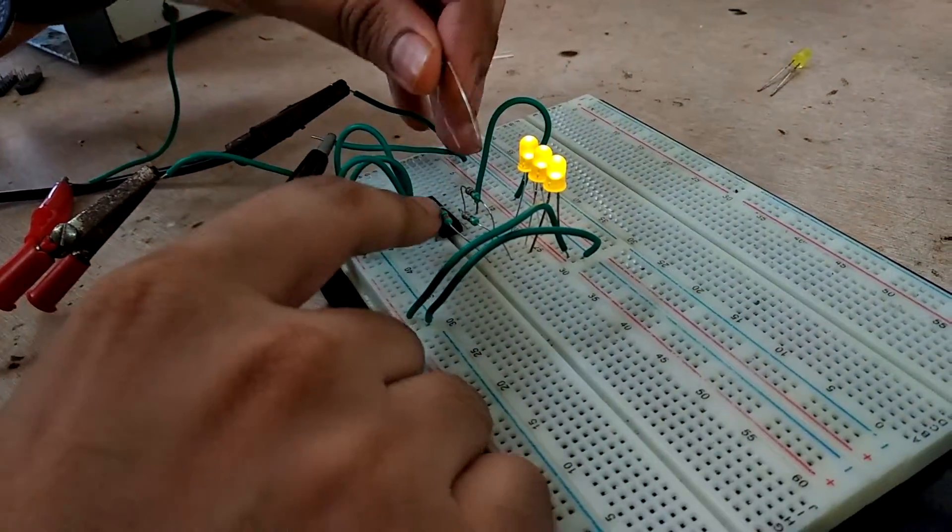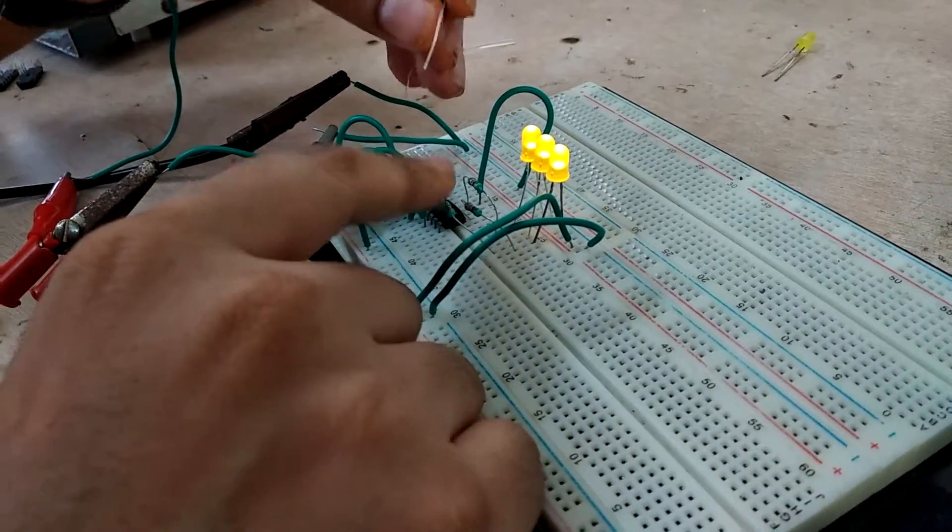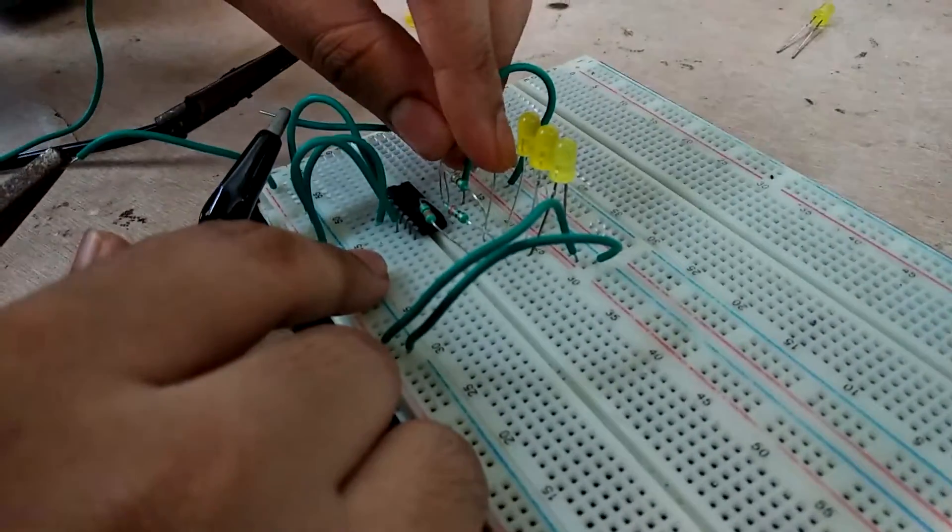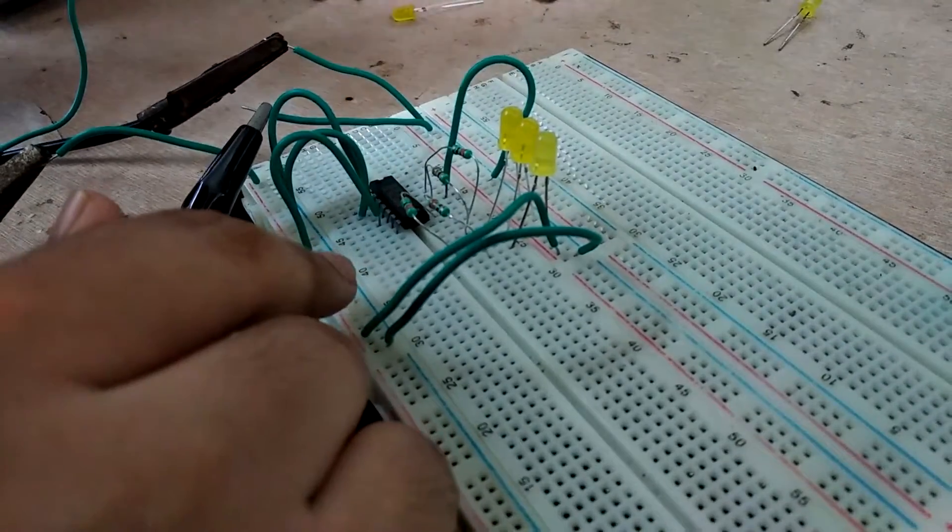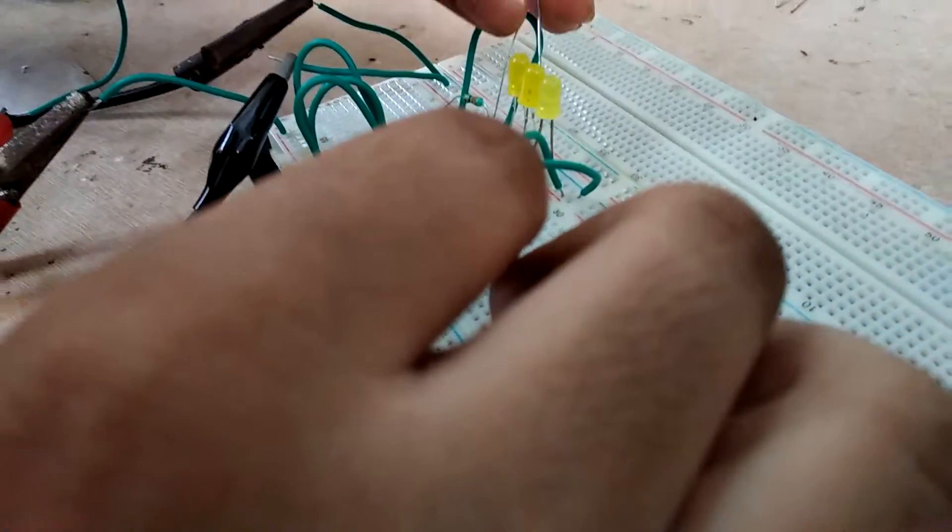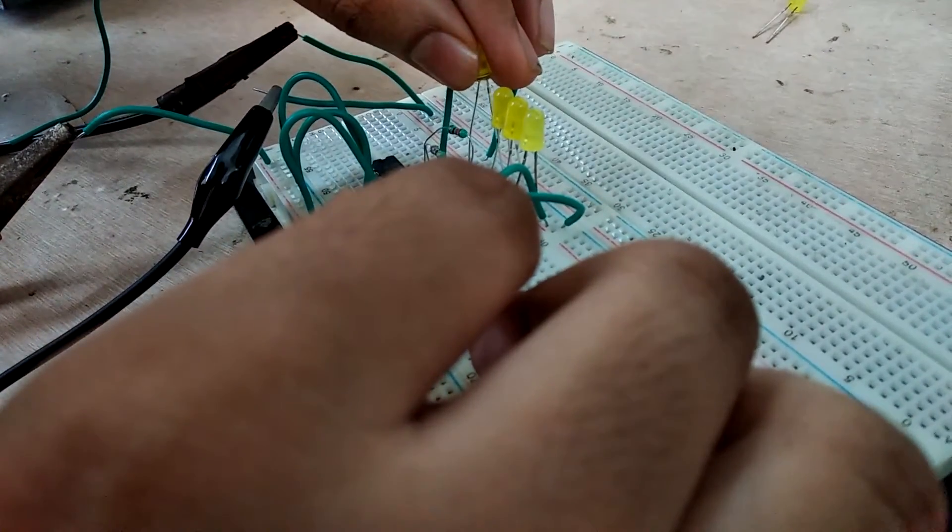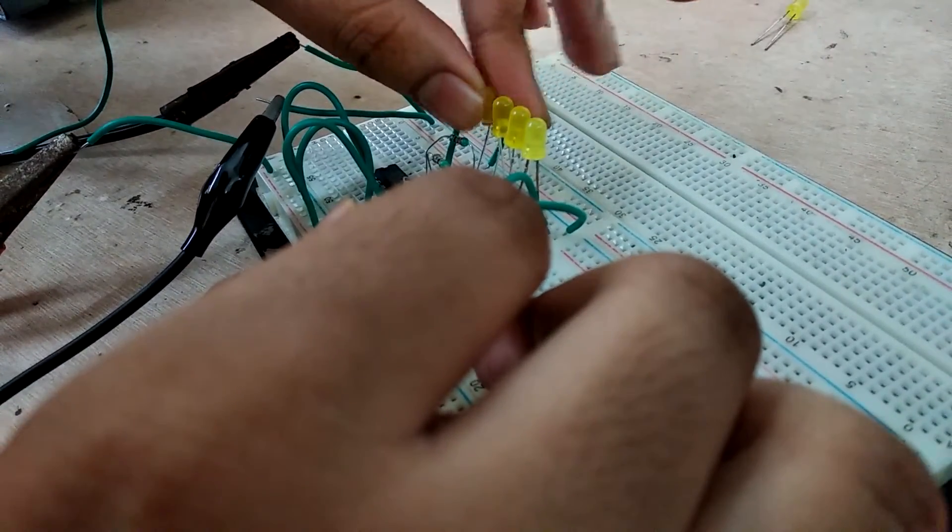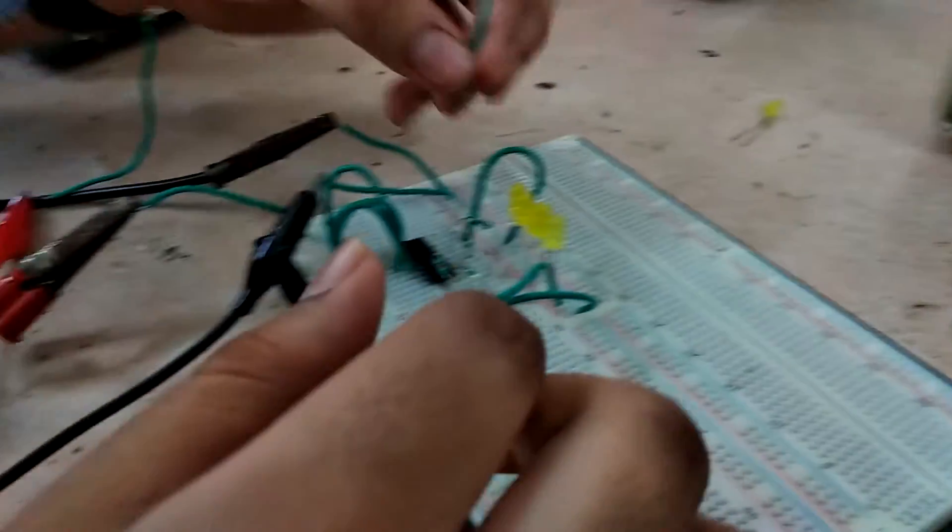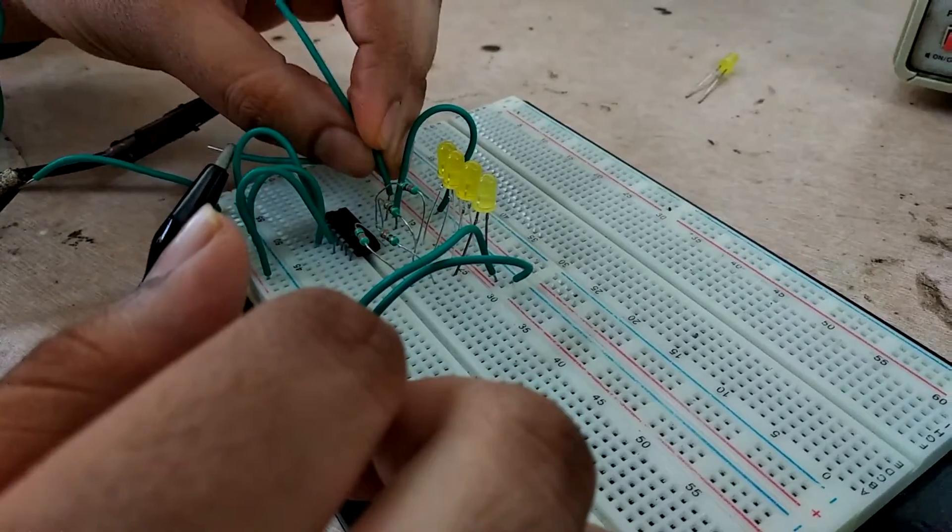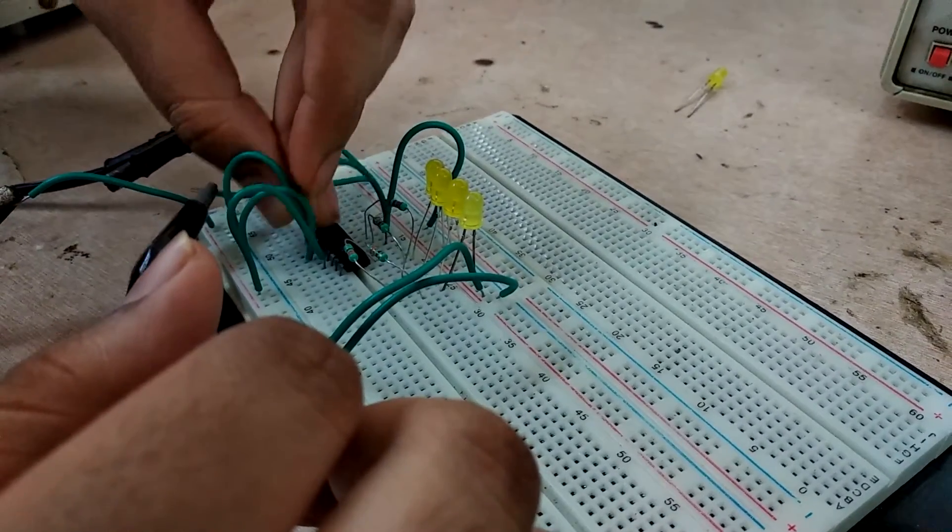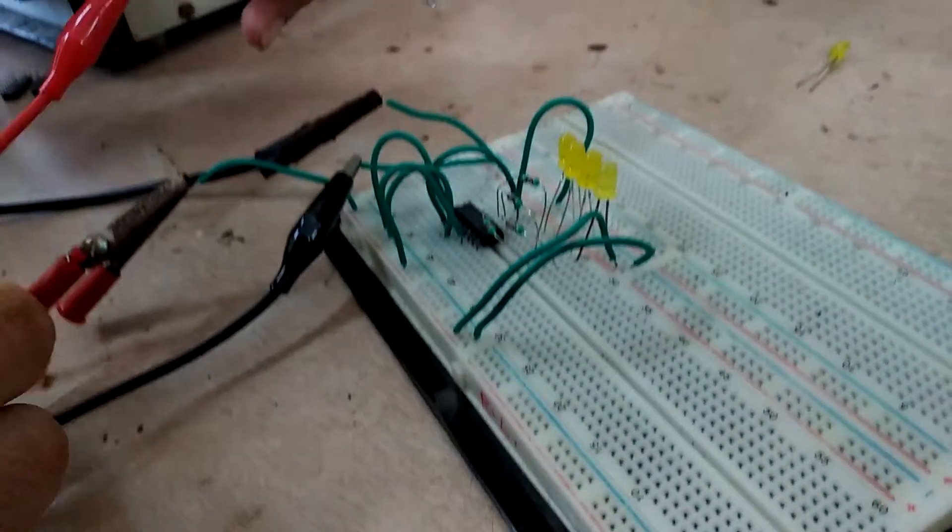Again connect pin 12, that is QA to the LED. And also connect that same output QA to clock of 2nd mod counter that is pin 1 and connect clock to pin 14.